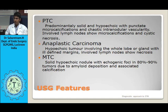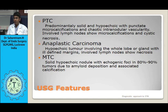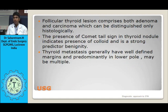A hypoechoic nodule is more associated with malignancy. If a hypoechoic solid nodule has punctate microcalcification, the specificity for papillary thyroid carcinoma is 98.3%. Papillary thyroid carcinoma will have a predominantly solid and hypoechoic nodule with punctate microcalcification and chaotic intranodular vascularity, with involved lymph nodes that may show microcalcifications and cystic necrosis. A necrotic lymph node with thyroid enlargement is 100% suggestive of papillary thyroid carcinoma.